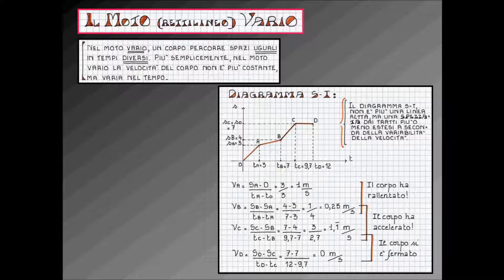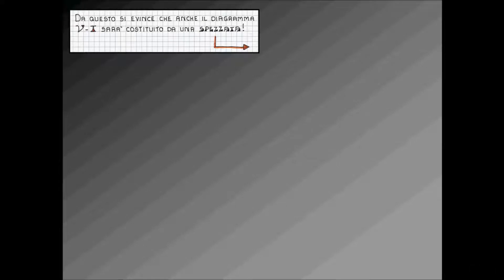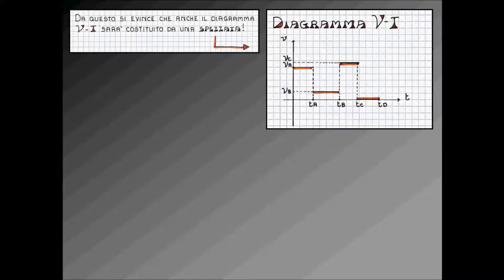Se calcoliamo, utilizzando la formula precedentemente introdotta, qual è stata la velocità del corpo nei vari tratti del diagramma, noteremo che la velocità risulta essere, di tratto in tratto, sempre variata. Da questo si evince che anche il diagramma velocità-tempo sarà costituito nel moto vario da una linea spezzata.